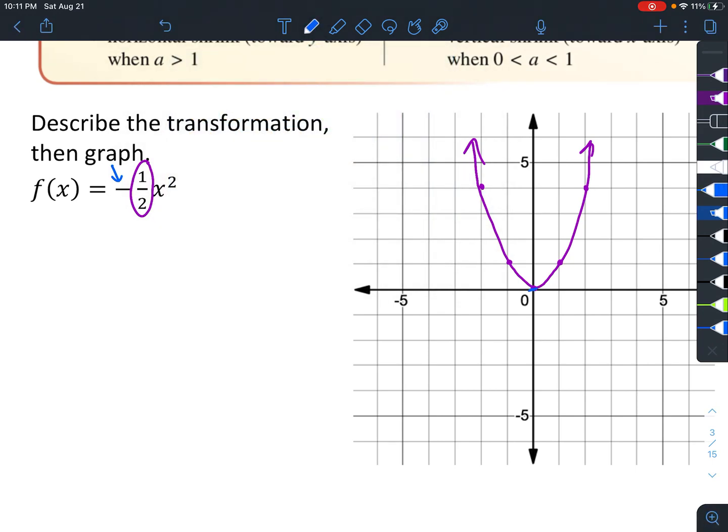When we reflect it, we know it's going to go downward, but it's going to start at (0,0) still. So instead of having an output of 1, it's going to have an output of 1/2. And this one, instead of having an output of 4, it's only going to have an output of 2.